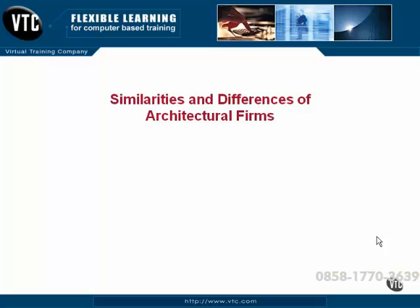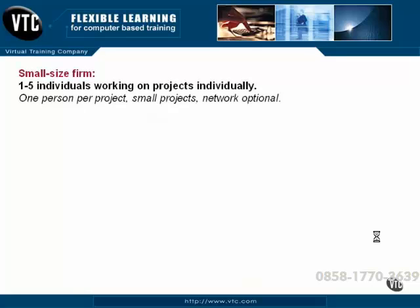I would like to take some time now to discuss the general similarities and differences of architectural firms. We will discuss small, medium, and large firm sizes and how CAD is used. Beginning with the small firm size: one to five individuals working on projects individually, meaning one person is working on one project at a time on one computer. These are small projects — new commercial or residential. Networking is optional because each individual will have one project on one computer, though this is not recommended. All computers should be networked so that you can share files.